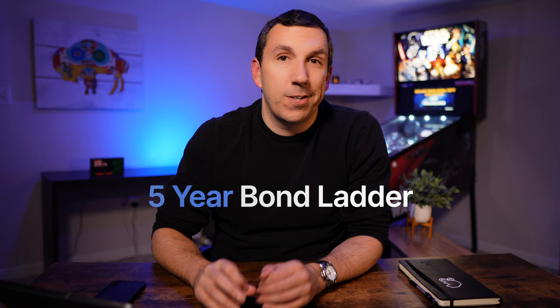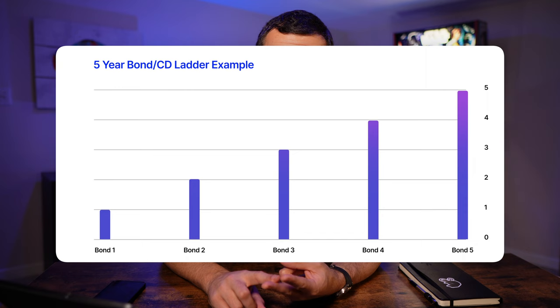Basically what you're doing is buying multiple bonds or multiple CDs with different maturity lengths. For instance, if you wanted to build a five-year bond ladder or CD ladder, you'd set it up in the following way. Right off the bat, when you make your initial investment, you're going to buy five different bonds or CDs: a one-year maturity, two-year maturity, three-year, four-year, and five-year.